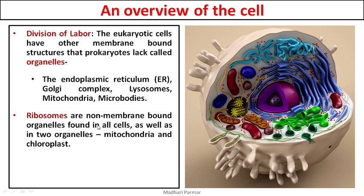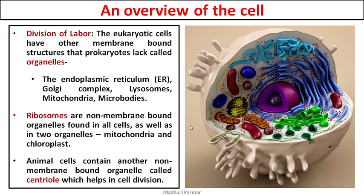Ribosomes are found in all cells — plant cells, animal cells, and bacterial cells. They are also found in mitochondria and chloroplasts, which have their own ribosomes. Then for animal cells specifically, they have another organelle called centriole, or a pair of centrioles called centrosome, shown in yellow. Centrioles are important during cell division — they give out the spindle fibers which help separate the chromosomes. These centrioles are also without a membrane, and centrioles are absent in plants.